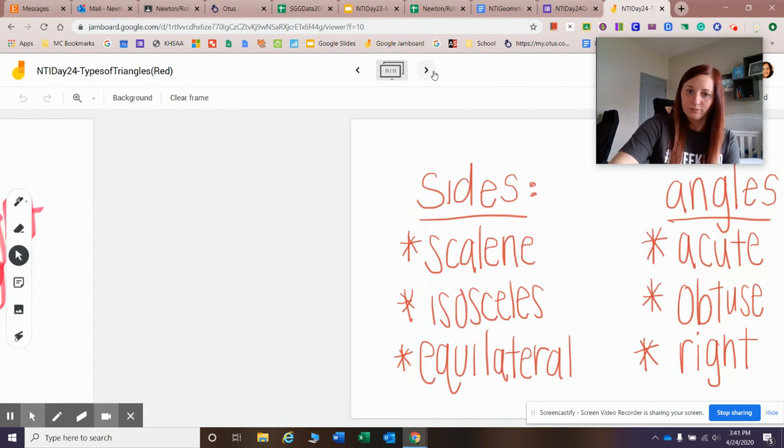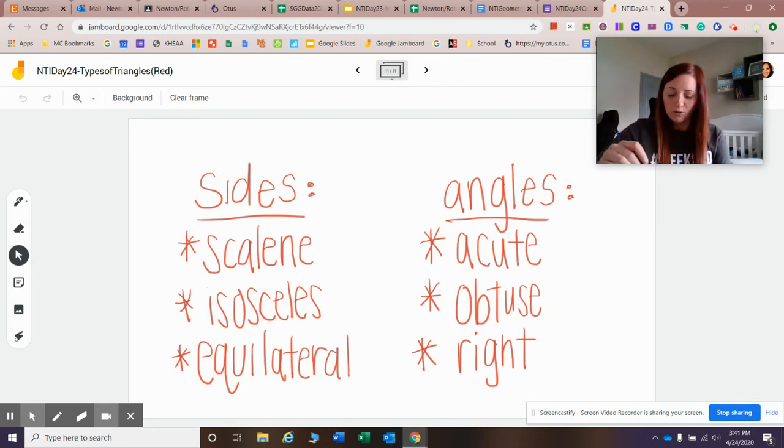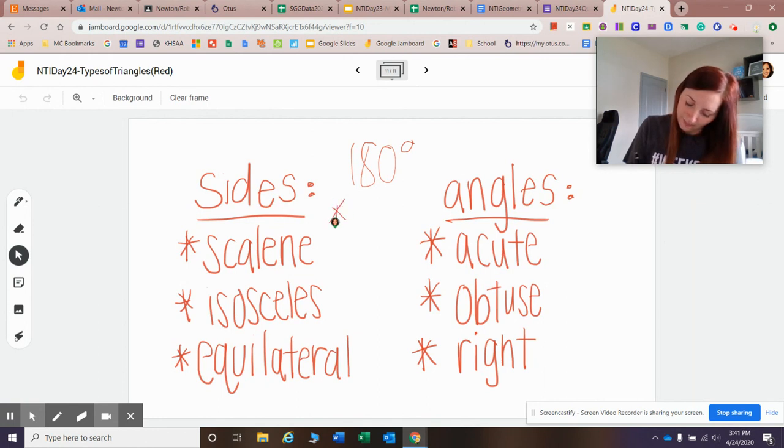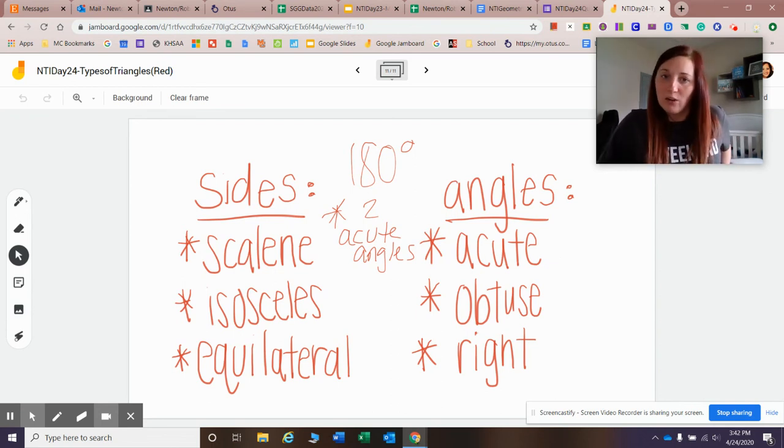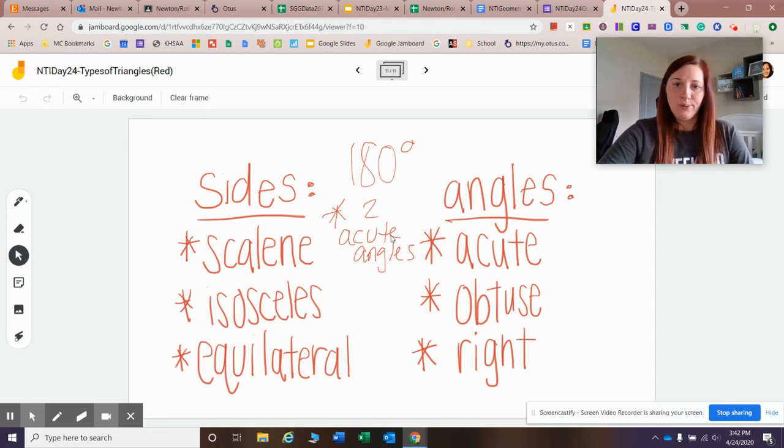So let's do a little review. So triangles have to equal up, all their angles equal 180 degrees. They all have to have at least two acute angles. And they're classified into two different categories. You have triangles that are classified by their sides. And you have triangles that are classified by their angles. So whenever you're thinking about the three different sides, you have scalene, which means that none of their sides are the same length. Isosceles, which means that two of their sides are the same length. And equilateral, which means all three sides are the same length. Then whenever you classify them by angles, an acute triangle has three acute angles. An obtuse triangle has one obtuse angle. And a right triangle has one right angle.